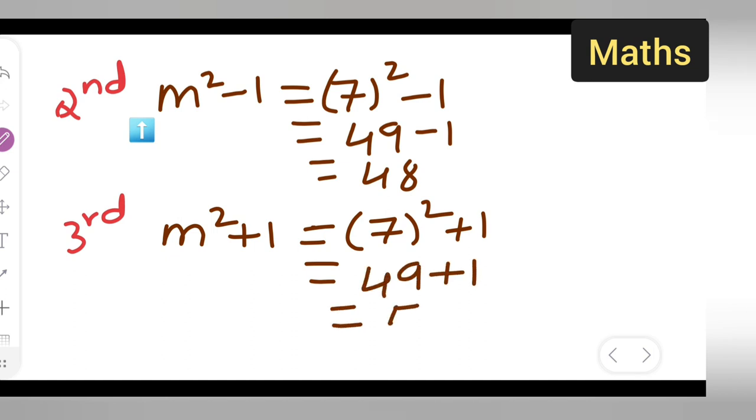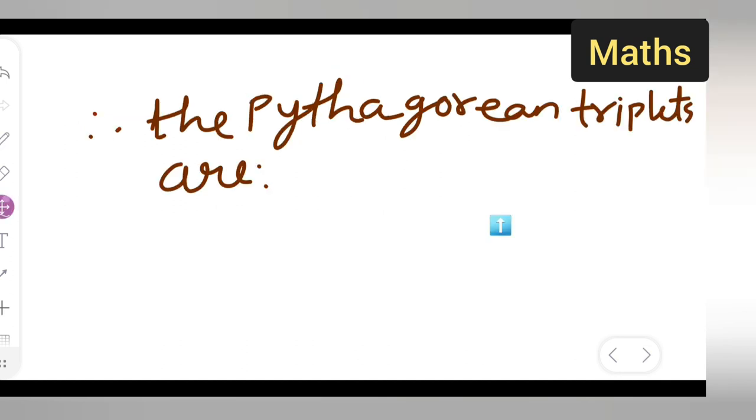The last part, write down this: therefore, the Pythagorean triplets are—what are the Pythagorean triplets here? The Pythagorean triplets will be 14, 48, and 50. So I hope you all have understood.